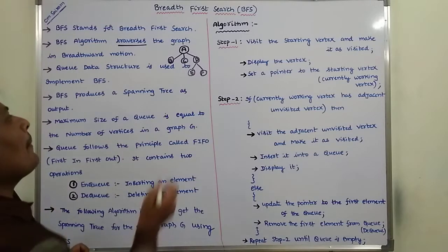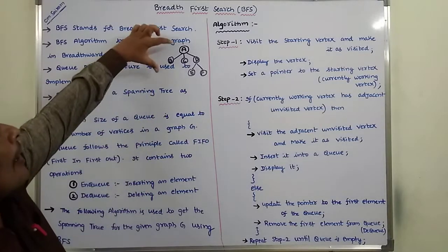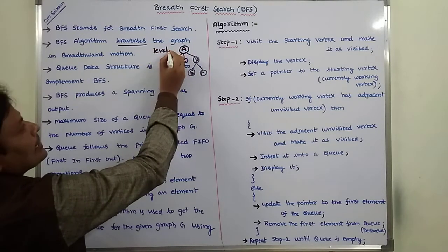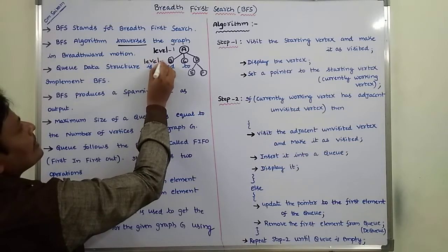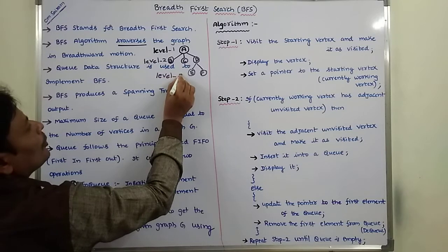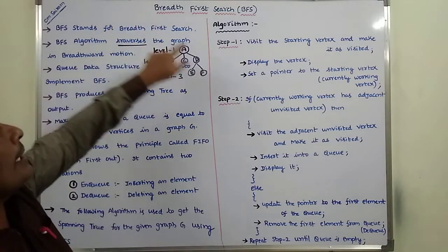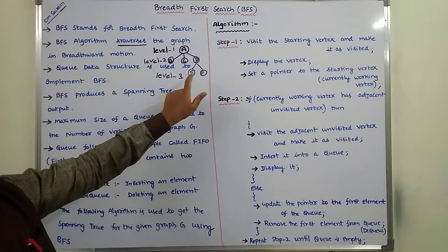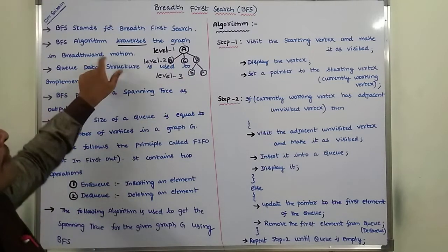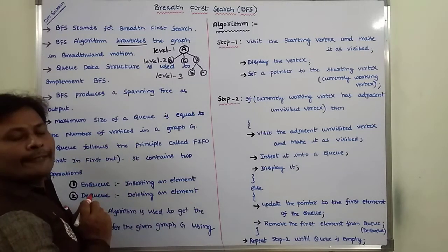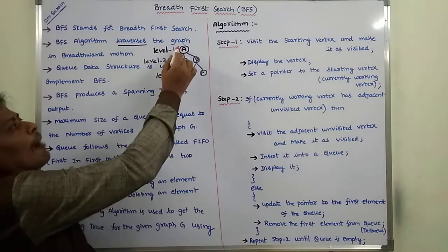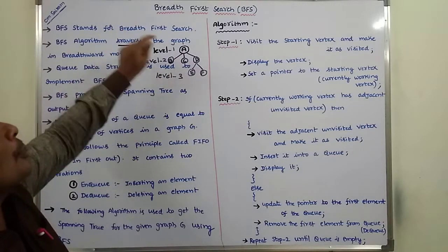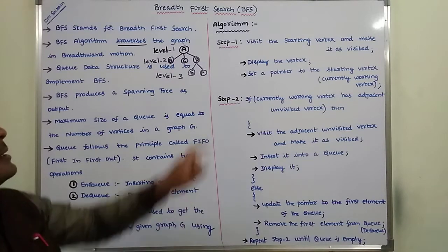What is breadth-first motion? Suppose we are taking this graph. This graph contains 6 vertices. Level 1 contains 1 vertex, level 2 contains 3 vertices, and level 3 contains only 2 vertices. Level 1 contains vertex A, level 2 contains vertices B, C, D, and level 3 contains vertices E and F. In BFS, we have to visit the vertices of a graph in a level-by-level order. First, we visit the vertex in level 1, that is A.